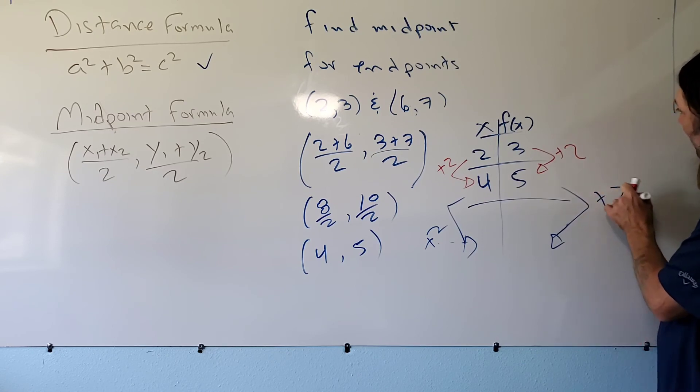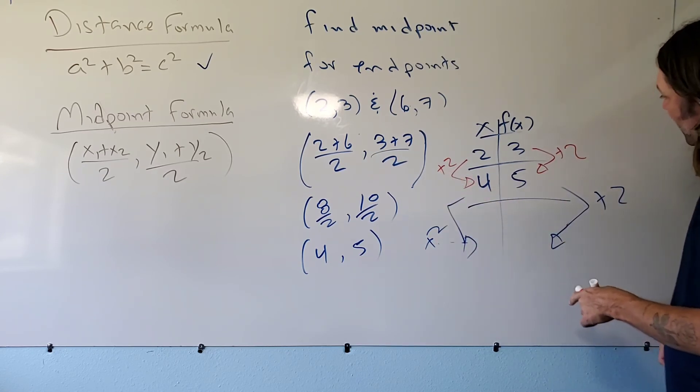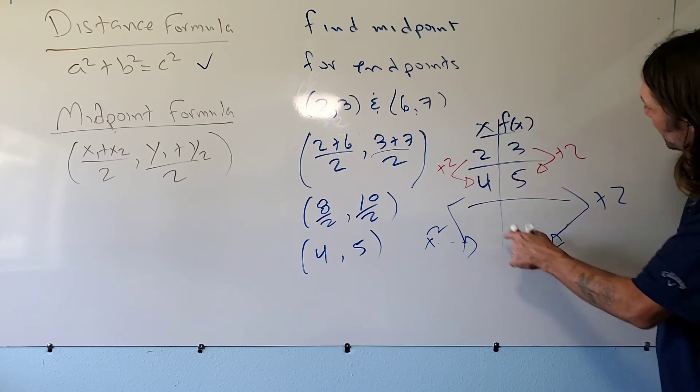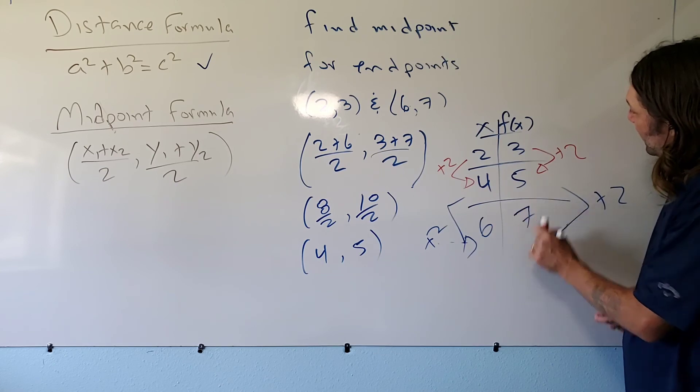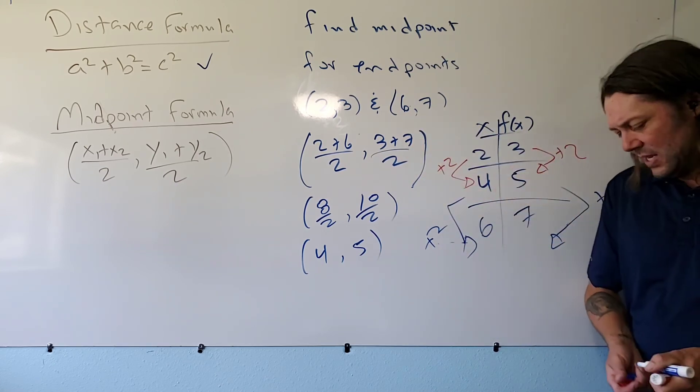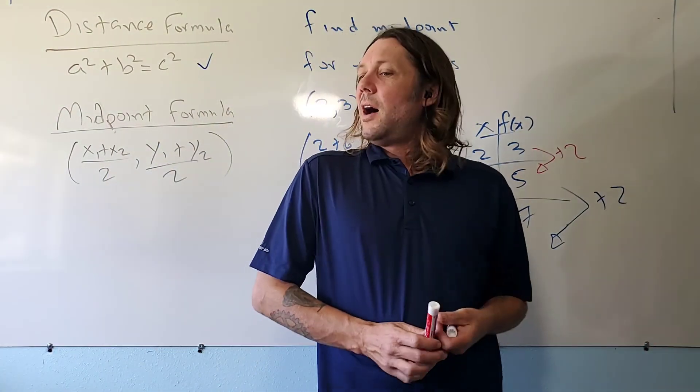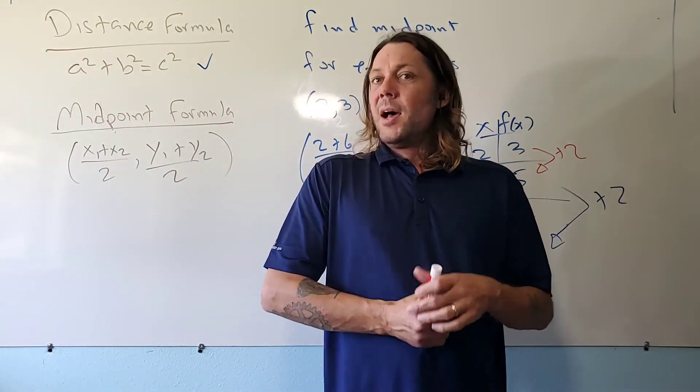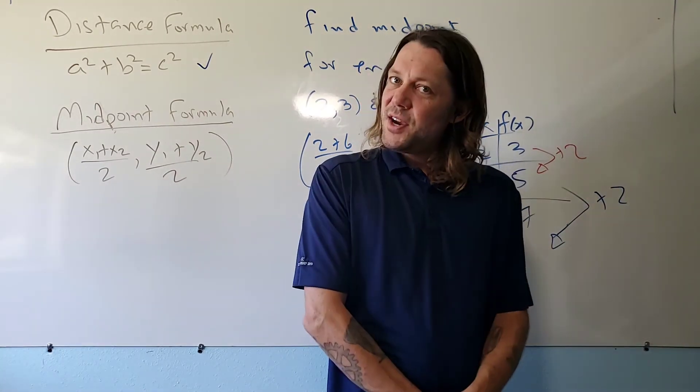So if I continue the pattern, I should expect to hit my other endpoint. So if I add two to four, I get to six, and I add two to five, I get to seven, and that in fact is my last endpoint. I wanted again to show you this—this is going to be in a question that is asked of you.